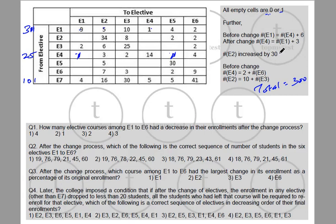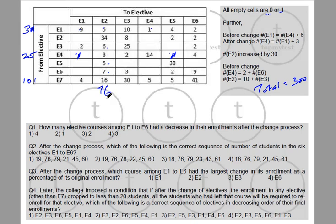e2 increased by 30 after the change. Looking at the e2 column — that total represents people after the movement. Totalling the e2 column: 39 + 6 = 45, then 48, 53, 60, 76 — the total is 76. Since e2 increased by 30, before the movement it should have been 46.